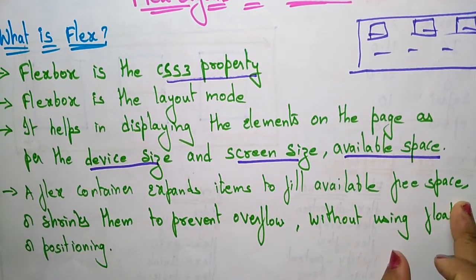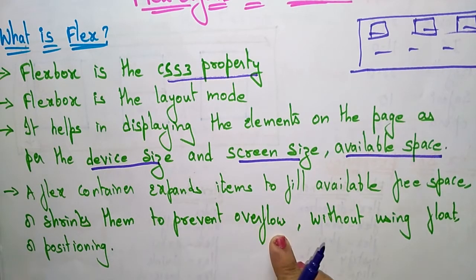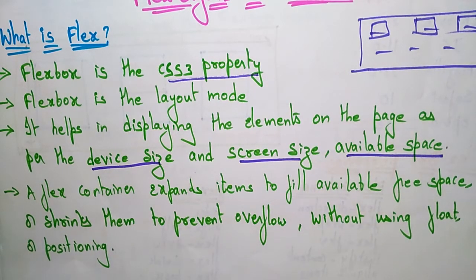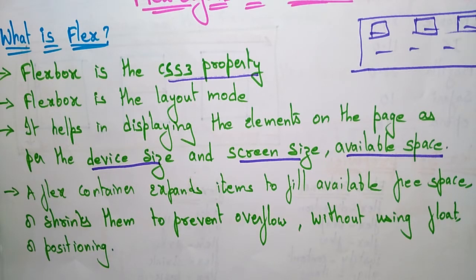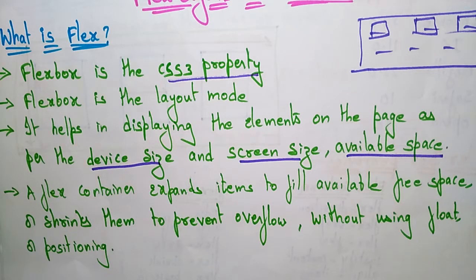A flex container expands items to fill available free space, or shrinks them to prevent overflow, without using float or positioning. Unlike responsive web pages, flexbox displays the page by expanding or shrinking items without using those positioning elements.